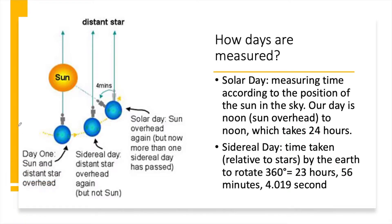In the last class we discussed about different types of orbit on the basis of inclination angle. Today we are going to discuss about some other types of orbit, not based on inclinations, but based on the position of the Sun.